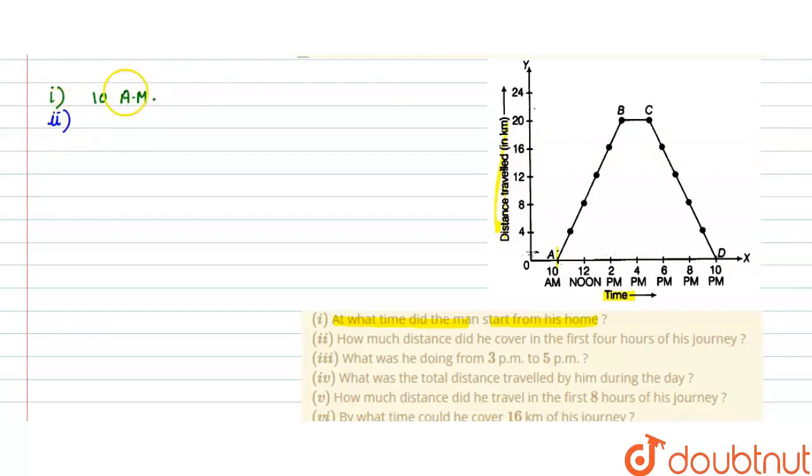Second part of the question: How much distance did he cover in the first 4 hours of his journey? First 4 hours means till here, 2 PM of his journey, he has covered the journey. So 2 PM, he has reached here.